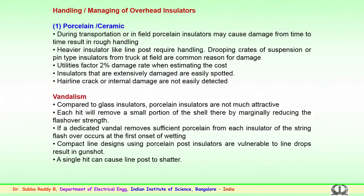We have discussed various procedures and processes involved in the manufacturing of ceramic, glass, and the recent composite or polymer insulators used for transmission. Various stages of the manufacturing process have to be carefully managed, as impurities or defects present during manufacturing, if left unnoticed, could have serious consequences in the field. Every stage must be carefully monitored to ensure the product is manufactured without any defects or impurities.